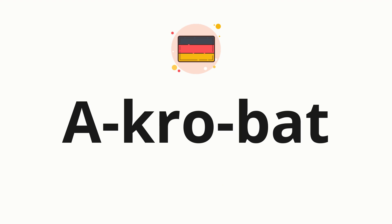Now let's split the word into syllables and then pronounce each syllable one by one: Ah — kruh — bat.